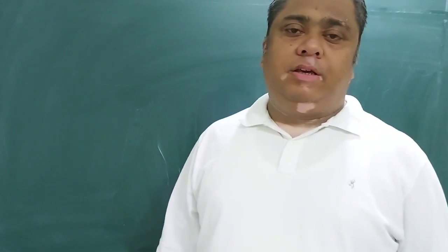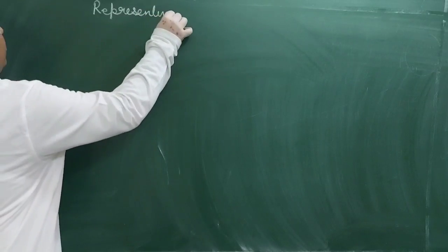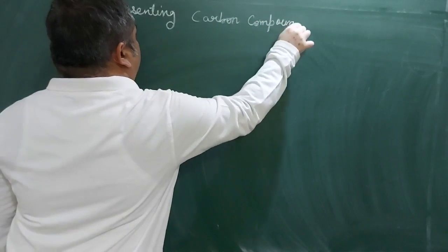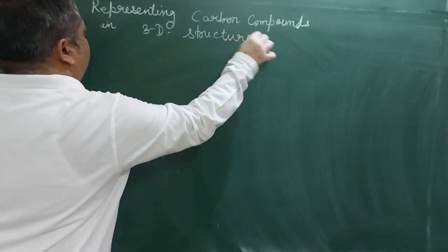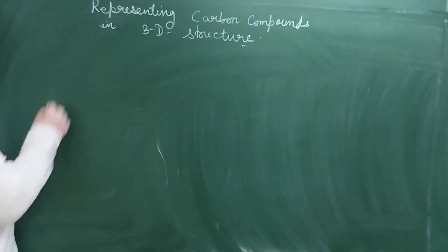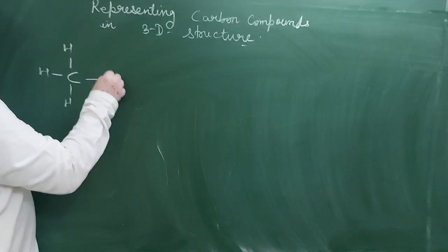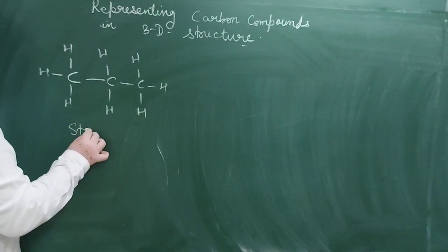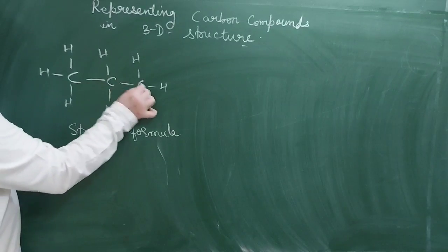Now we will see how to represent carbon compounds in a three-dimensional structure. There are various ways of writing down a molecule. Like if I write propane, I would write like this. This is the structural formula of one, two, three carbons, so it is propane.